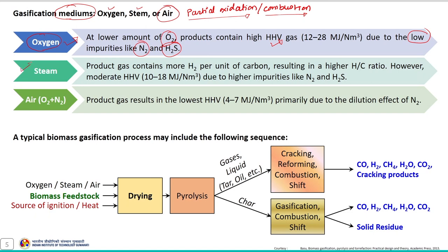When steam is used as the gasifying medium, the product gas contains more hydrogen per unit of carbon, resulting in a higher H/C ratio. A higher H/C ratio means a relatively lower high heating value. When steam is used as the oxidizing medium, the higher H/C ratio gives a product gas with moderate heating value, also partly due to impurities like nitrogen and hydrogen sulfide in its composition.